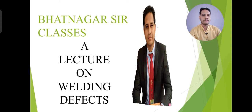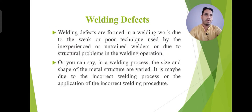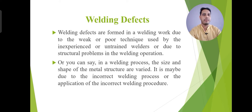In a welding process, the size and the shape of the metal structure are varied. It may be due to the incorrect welding process or the application of the incorrect welding procedure. There are many factors that will be responsible for any type of welding defects.